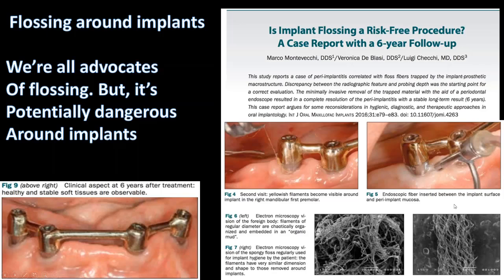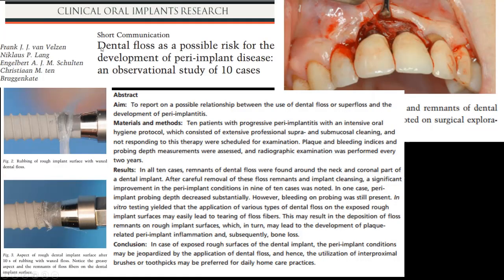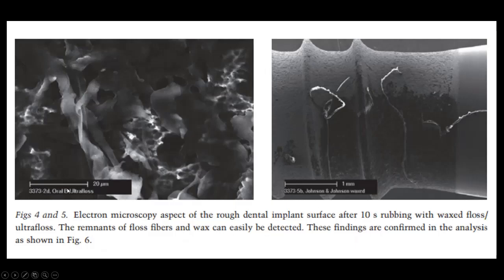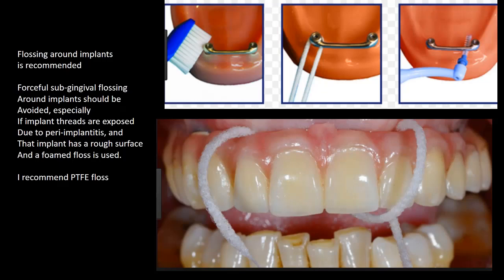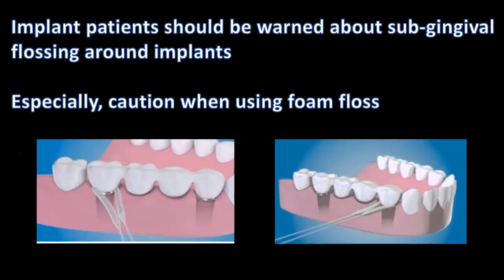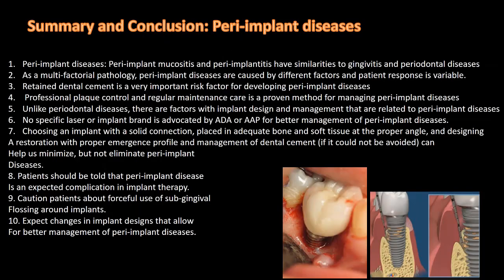I'll conclude and take questions. One question: is it peri-implantitis if there is bone loss and inflammation three months after placement, or is it non-integration? Researchers now allow six to eight weeks after placement before evaluating parameters, because bone loss earlier than that is not necessarily peri-implantitis — it typically needs more time to develop.